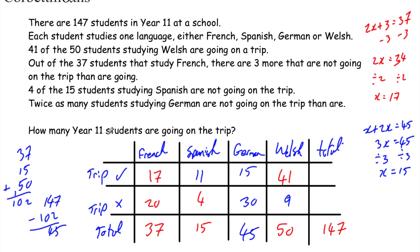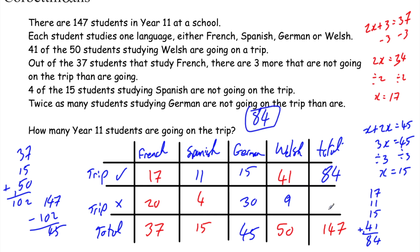The question asks how many Year 11 students are going on the trip, so we add up the trip row: 17 plus 11 plus 15 plus 41 equals 84 going on the trip. If asked how many are not going, we do 147 minus 84, which equals 63. And that's it.